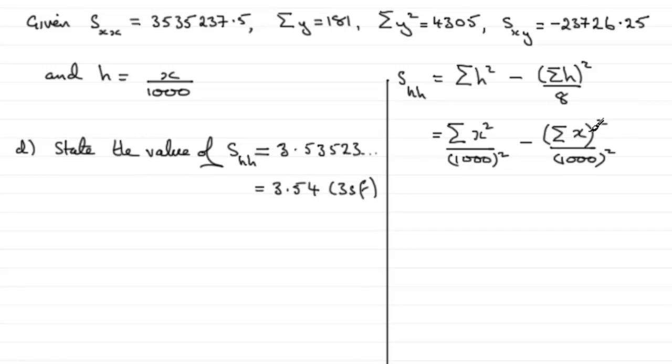And all this is divided by 8, so I could either put it all over 8 or I could stipulate it in there, it's the same answer. Now I can pull 1 over 1000 all squared out as a common factor, and then I've just got the sum of X squared minus the sum of X all squared over 8.